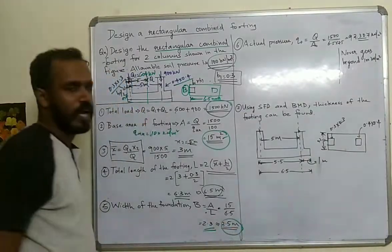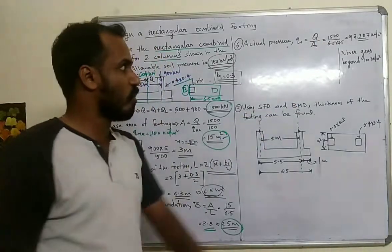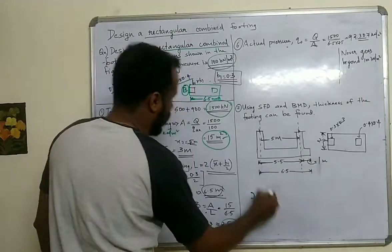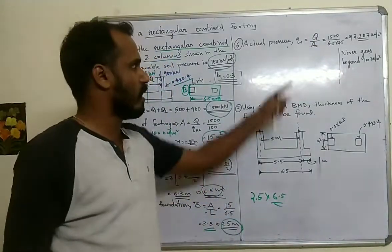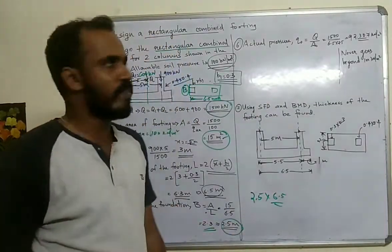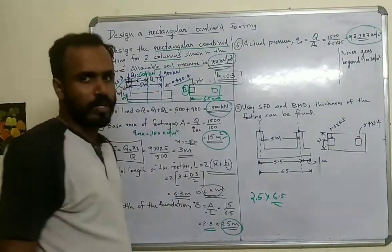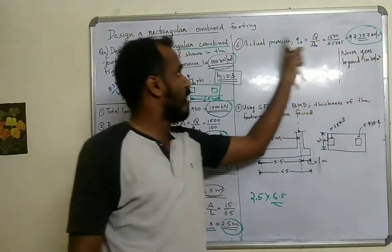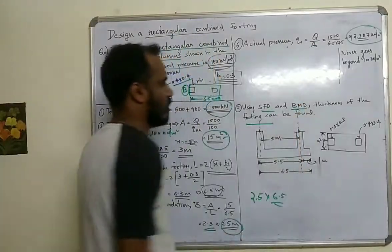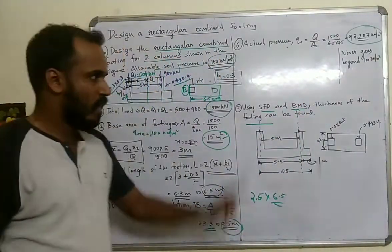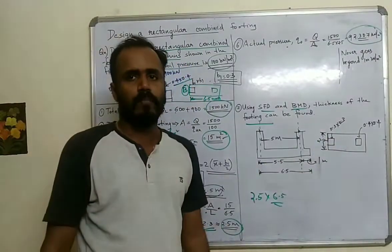The actual soil pressure q is equal to Q divided by A0, where A0 is 2.5 m × 6.5 m. This gives an actual pressure of 92.307 kN/m², which is less than the allowable soil pressure of 100 kN/m². Therefore, the size of the footing is acceptable.